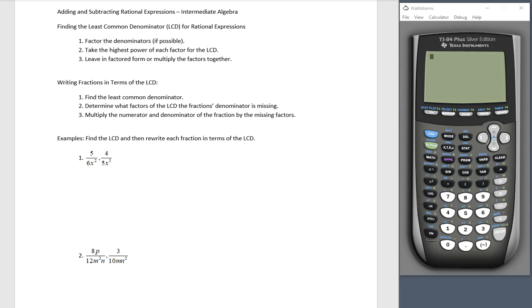Let's start with a find. Find the LCD. So I'm looking at 6x squared. And that is 2 times 3x squared. Take your other denominator, 5x to the fifth. Factor it completely. Well, 5 is a prime factor. It is already factored.